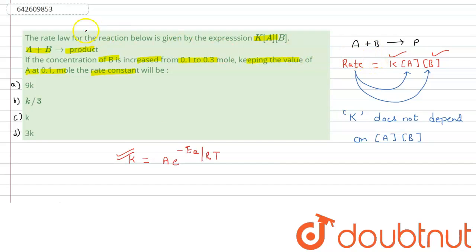Looking at the options: option A says the rate constant equals 9K — that is wrong. Option suggesting K by 3 is also not possible since K is independent of concentration. Option C says it is equal to K, which is correct. The rate constant does not change when we change the concentration of the reactant; it totally depends upon temperature and the catalyst. So the correct answer is option C.